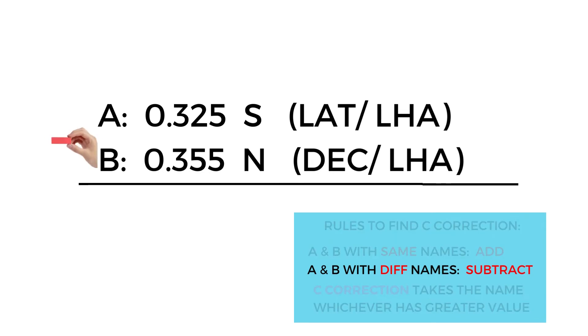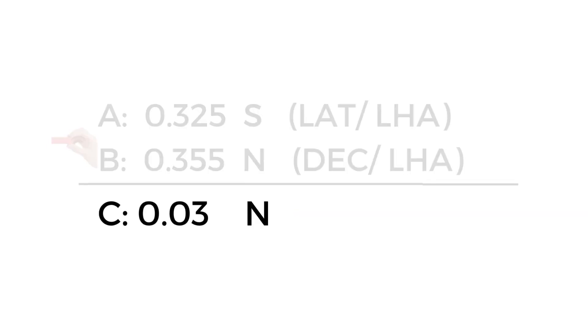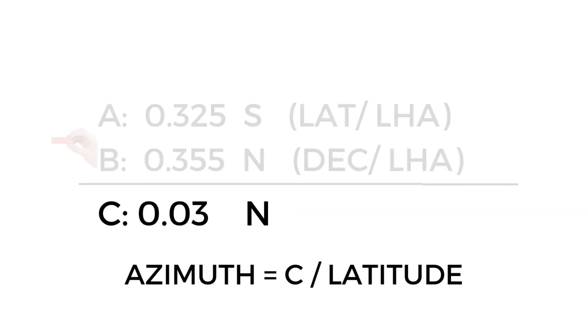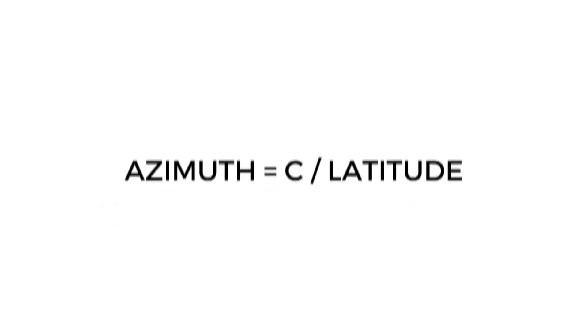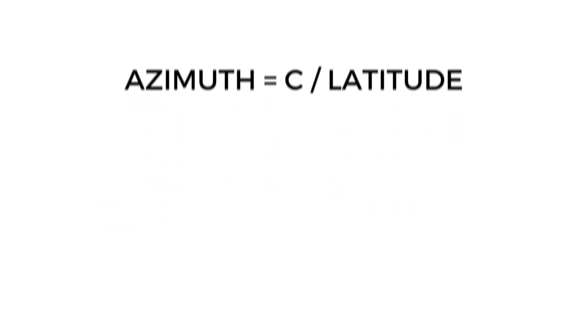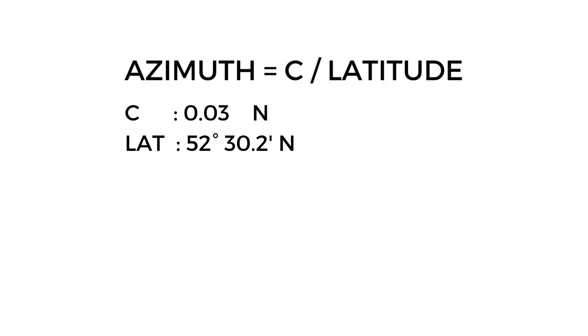Since our A and B have different names, let's subtract them — this gives us C = 0.03 north. We are almost there. Finally, the formula for finding the azimuth, also known as the bearing of our sun, is: azimuth = C divided by latitude.